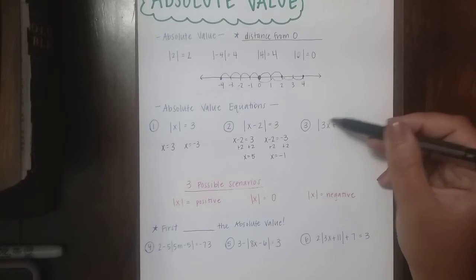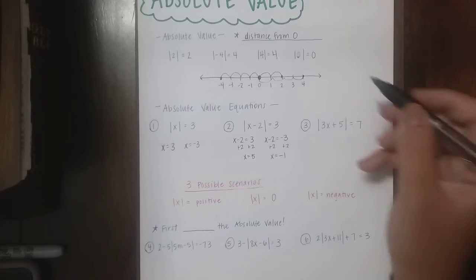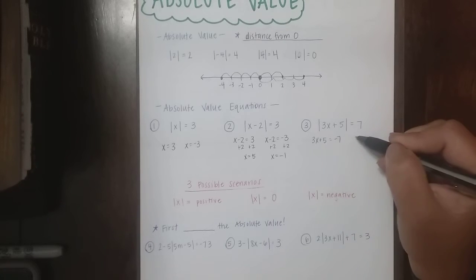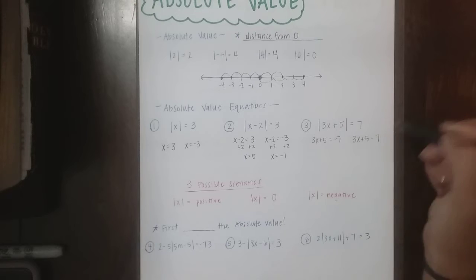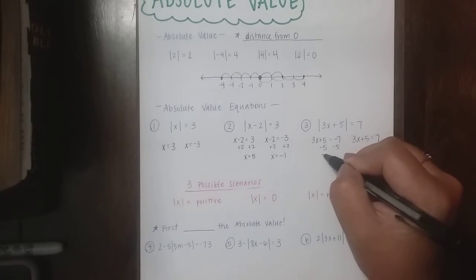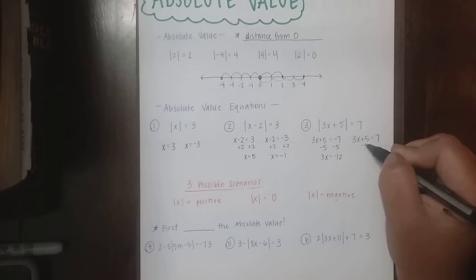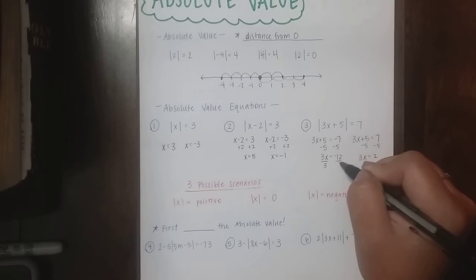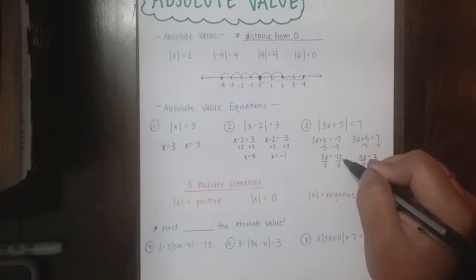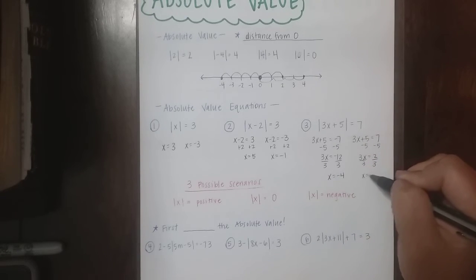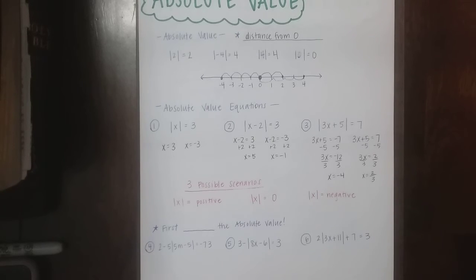For number 3, my absolute value — my distance from 0 — is 7. So everything inside can either equal negative 7 or positive 7. It doesn't matter which order you write them. Then I have to solve for x, so we're going to subtract, then divide to get x by itself. Negative 12 divided by 3 is negative 4. And 2 divided by 3 can't be simplified, so we leave that as 2 thirds. So my answer is negative 4 and 2 thirds.